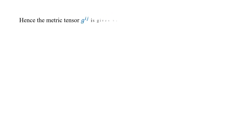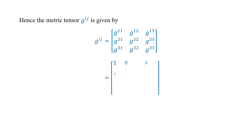Hence, the conjugate metric tensor g^ij is given by the matrix: g^11, g^12, g^13; g^21, g^22, g^23; g^31, g^32, g^33 — which equals 1, 0, 0; 0, 1 by r square, 0; 0, 0, 1 by r square sin square theta. This is the conjugate metric tensor in a spherical coordinate system.